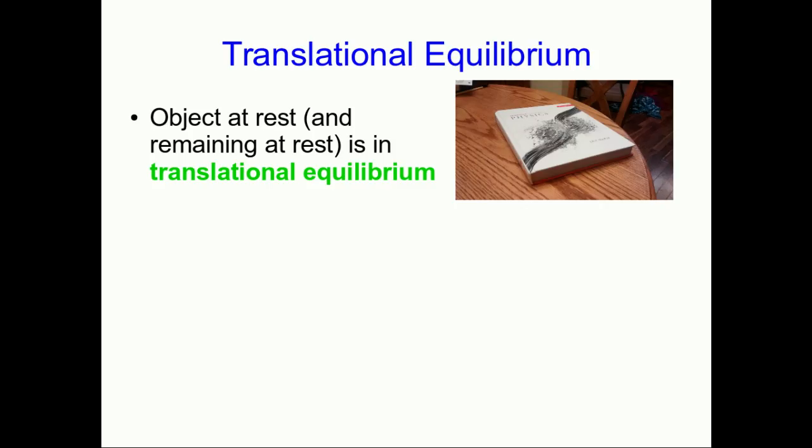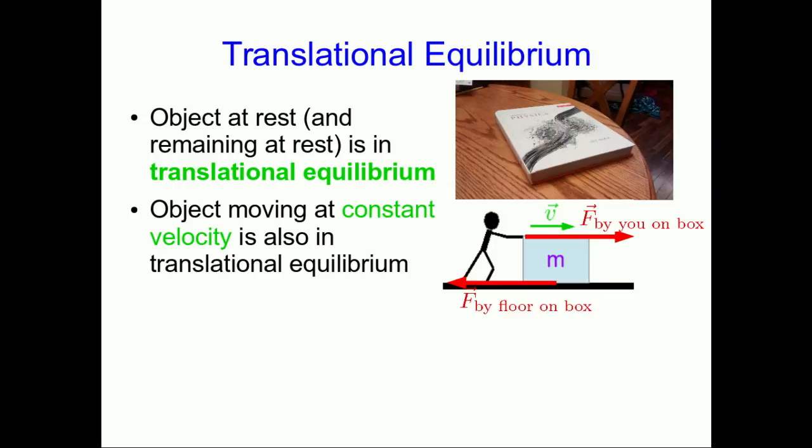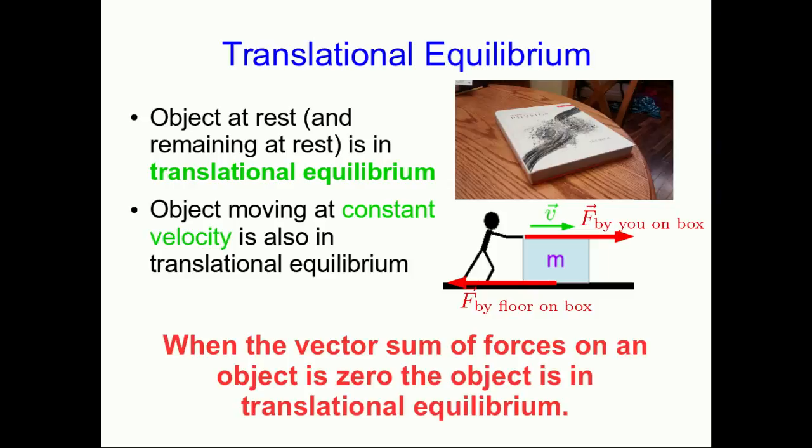A useful piece of terminology is translational equilibrium. An object at rest is in translational equilibrium, but another possibility is an object that's moving at constant velocity. Equilibrium means no change, or things being in balance, and so an object in translational equilibrium is an object in unchanging translational motion, or in other words constant velocity, and zero counts as constant.